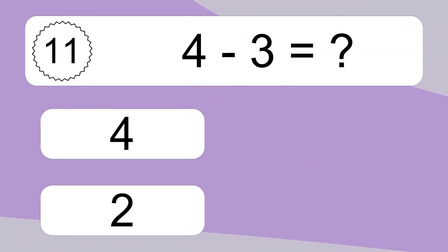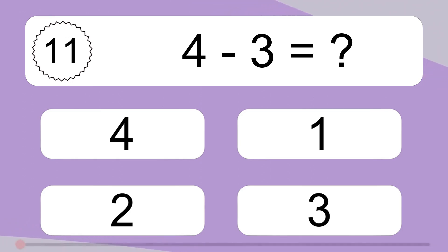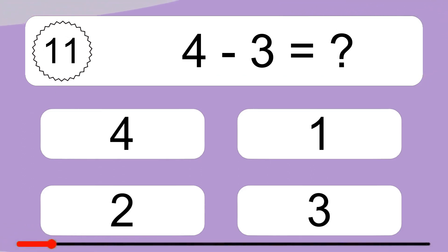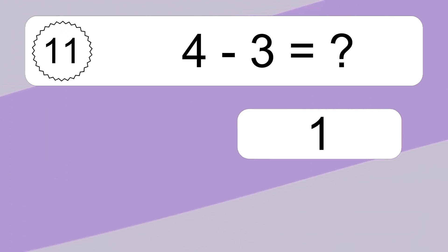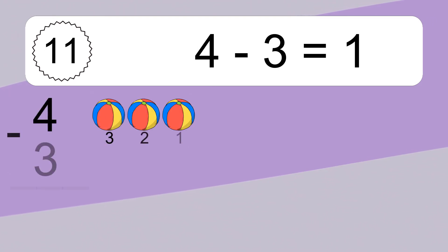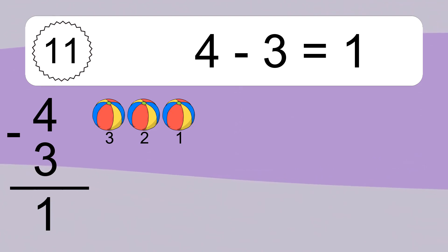4 minus 3 equals what? 4 minus 3 equals 1. Let's count it. 3, 2, 1.